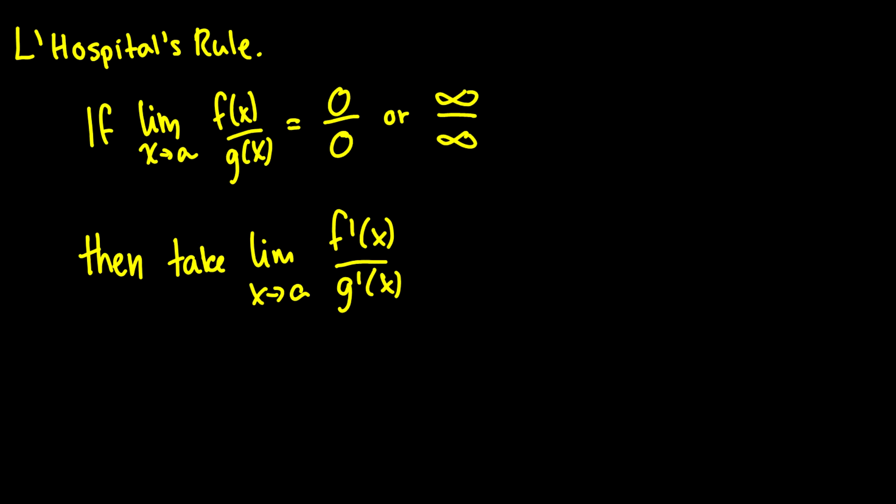If we take a limit as it goes to a of some f(x) over g(x), and it happens to equal 0/0 or infinity over infinity,